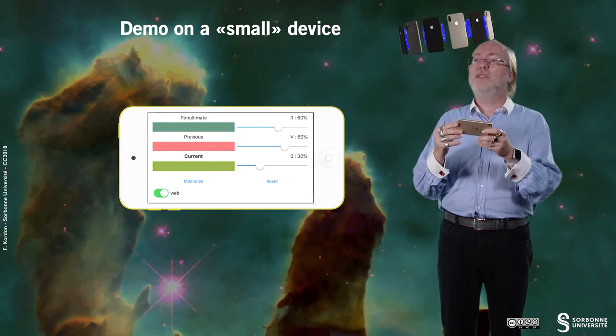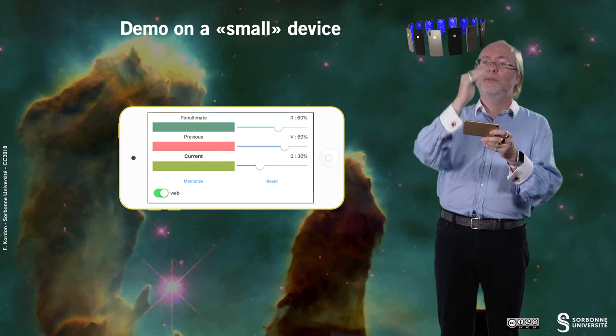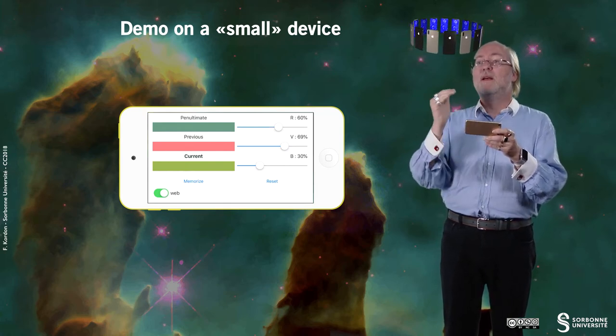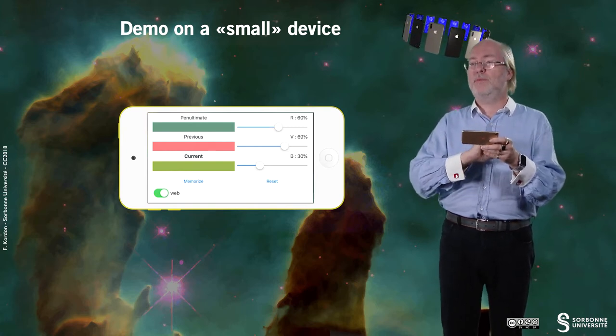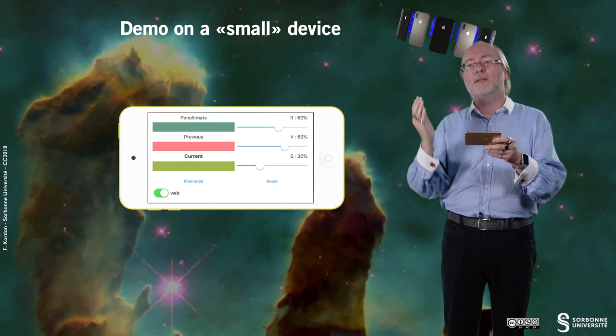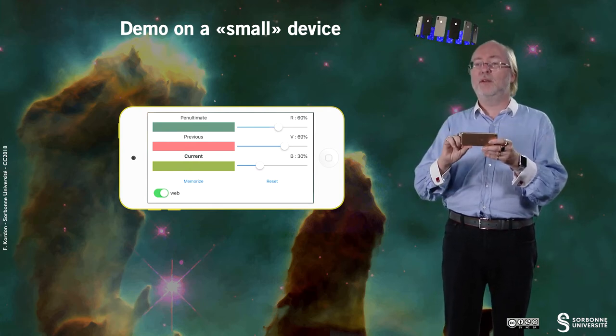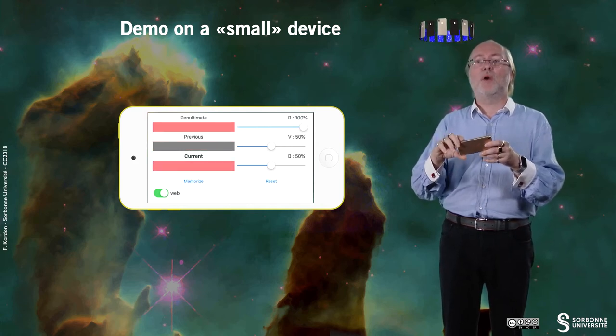An important fact is that if you put your small device in landscape mode, then the layout is totally different. You have on your left the three colors: current, previous, penultimate. Then you have below that the Memorize button and the web switch, and on your right you have the three sliders and the reset button. And of course, it should work exactly the same way.